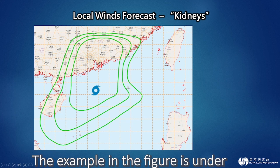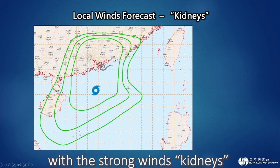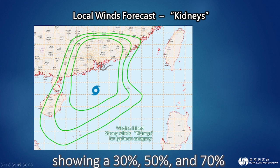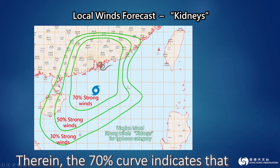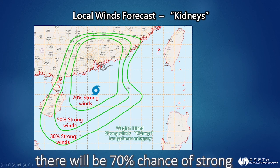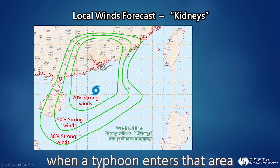The example in the figure is under the typhoon category, with the strong winds kidneys of Waiglin Island showing a 30%, 50%, and 70% probability curve. The 70% curve indicates that there will be a 70% chance of strong winds at Waiglin Island when a typhoon enters that area.